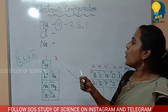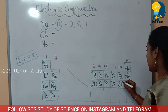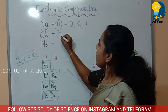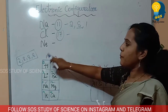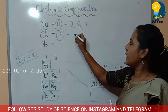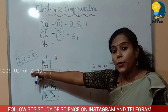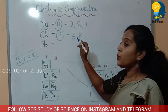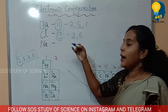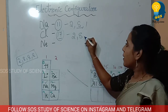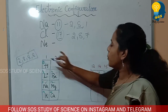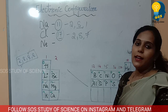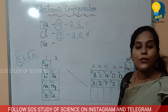Next, chlorine. Chlorine's atomic number is 17. First shell: write maximum 2. Second shell: write maximum 8. That gives 10. Remaining: 17 minus 10 equals 7. So the electronic configuration of chlorine is 2, 8, 7.